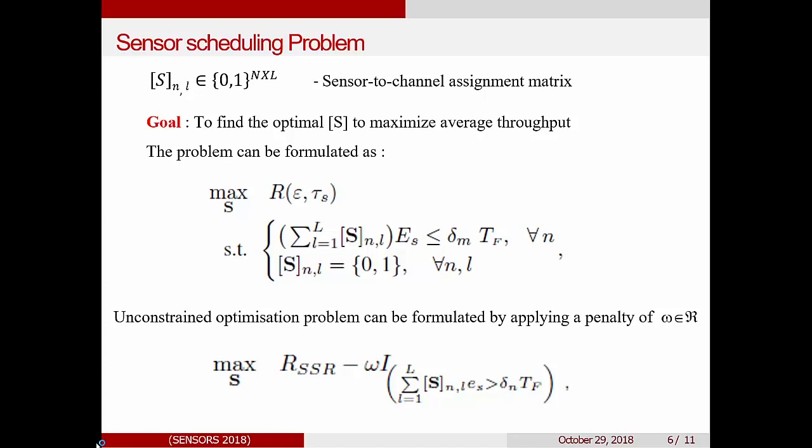So in this equation, we can see the energy which one spectrum sensor will use. So it consists of all the sensing energy and on the right hand side, we see the energy it can harvest. This is the energy harvesting rate multiplied by the total frame time. So the constraint is such that the sensing energy should be less than the energy harvested.